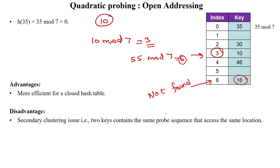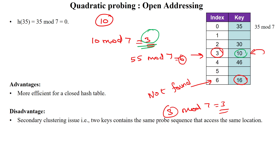For deletion, suppose we want to delete the value 3: 3 mod 7 equals 3, so we access index 3. If the data does not match, we say data not found. If it is 10 mod 7, we access index 3, find 10, and can delete it using the delete operation. This is the way to use quadratic probing for inserting, deleting, and searching keys. Thanks for watching.